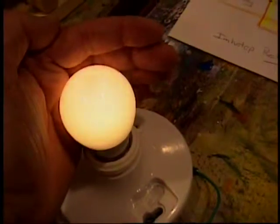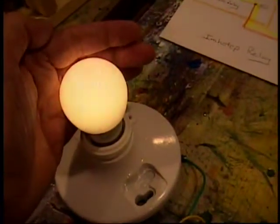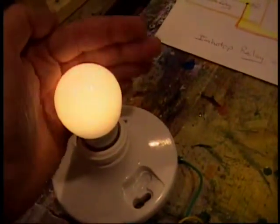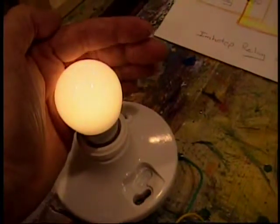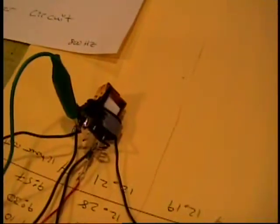So this light bulb thinks it's getting 120 volts, like it's plugged into the wall socket from a tiny, tiny, tiny coil with the connection just being made and broke. That's it. That's all this is.